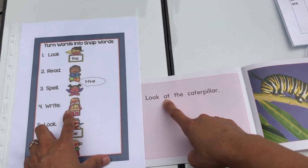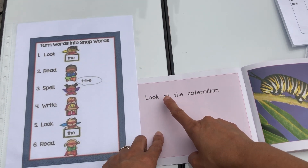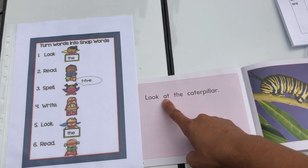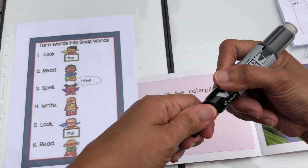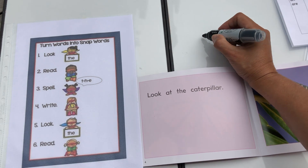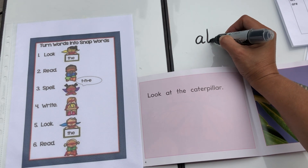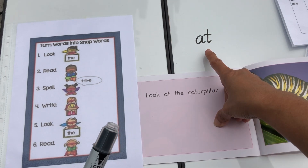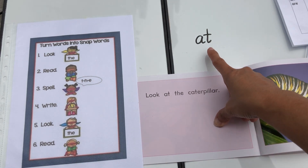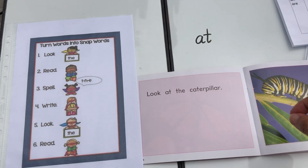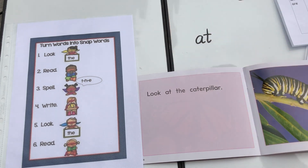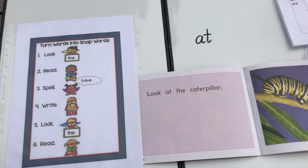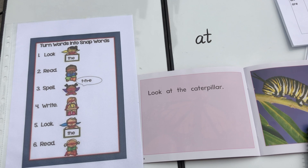So we look at the word 'at,' we read it — at. We spell it — A-T. And then we write it — A-T. And then we look again — at — and then read — at. Now put this in your imaginary pocket. Yes!